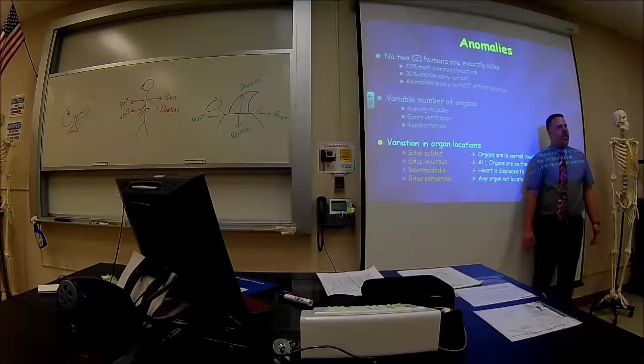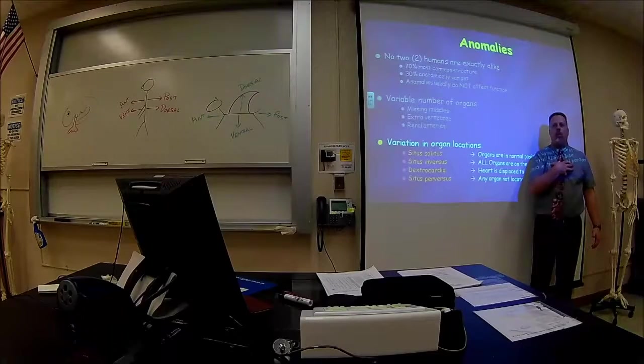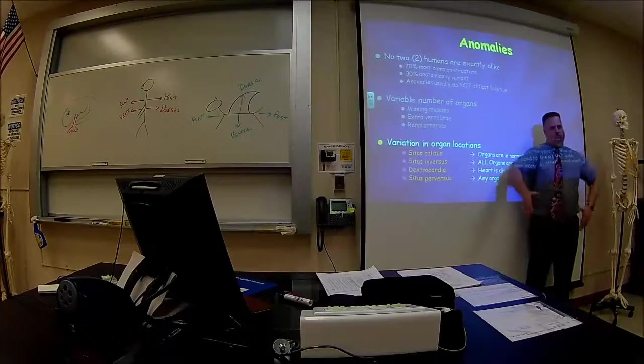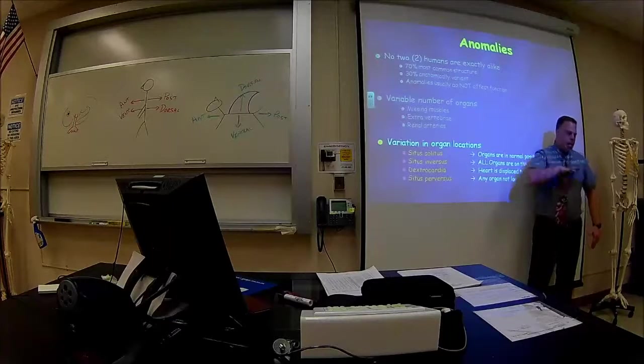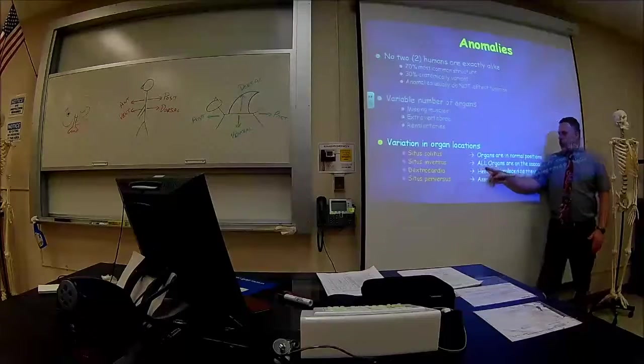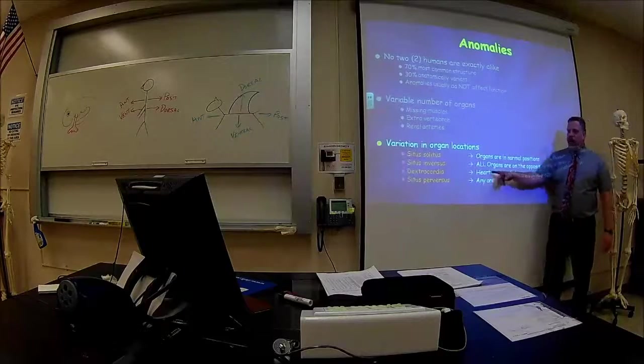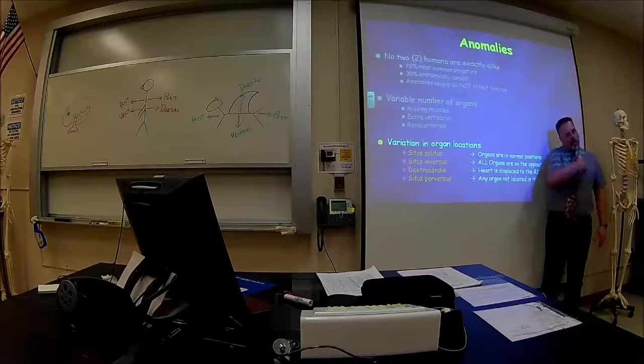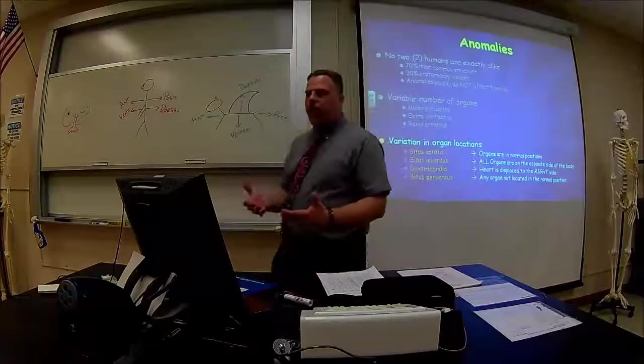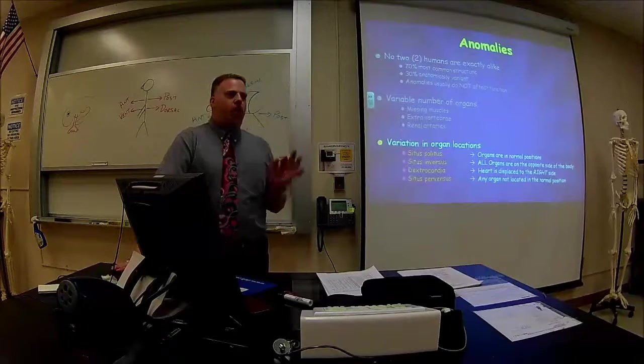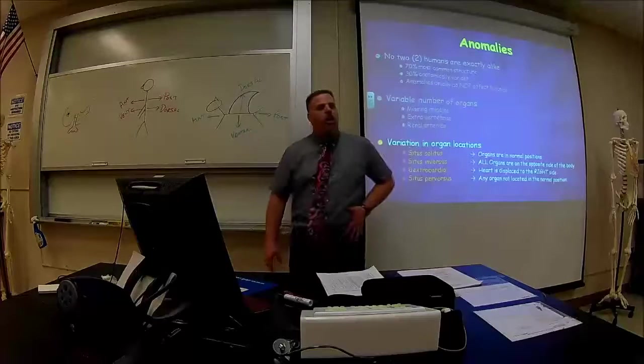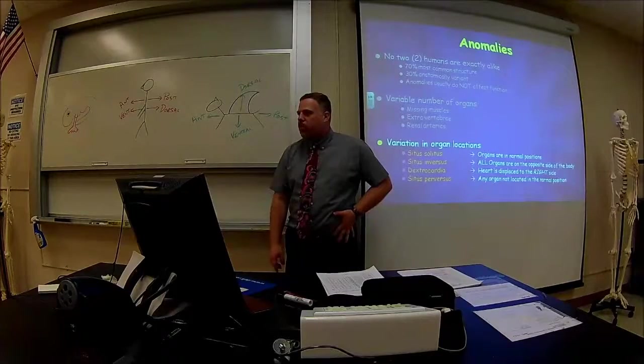My boss at one of my other jobs found out at 35 years old that her whole body, everything was on the opposite side. So her appendix is not here, it's over here. Her heart is not leaning towards the left, it's leaning towards the right. Situs inversus is all the organs are in the opposite side. Dextrocardia - just the heart is leaning towards the right. Situs perversus is any organ that's not located in a normal position.